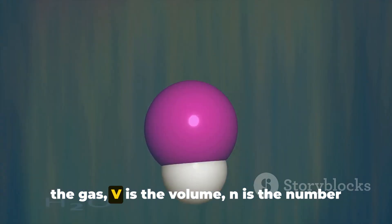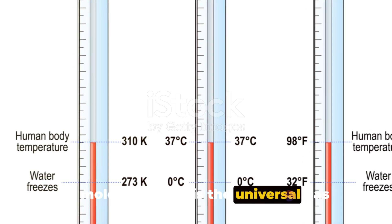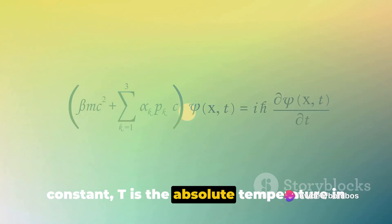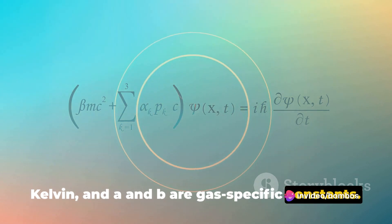Where P is the pressure of the gas, V is the volume, n is the number of moles of gas, R is the universal gas constant, T is the absolute temperature in Kelvin, and A and B are gas-specific constants.